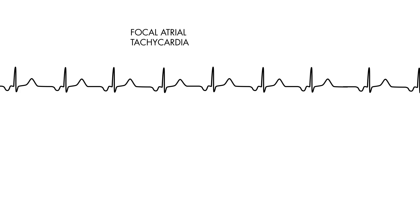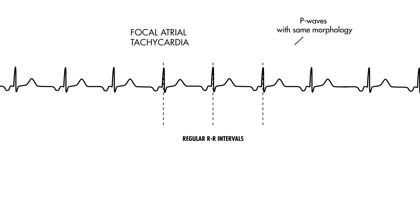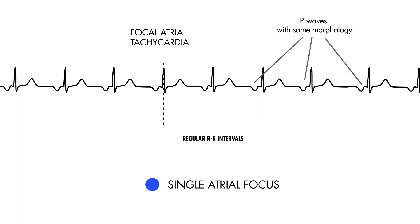In cases of focal atrial tachycardias, the rhythm is often regular and P-waves are identical because of electricity originating from a single atrial focus. That means electricity comes from a site that is not sinus or from the SA node, but often conducts one-to-one down to the ventricles.